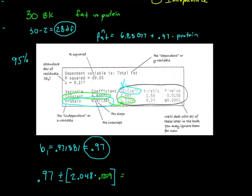So it would be 0.97 minus 2.048 times 0.1209. So I get that my slope could be as low as 0.7224 to as high as 1.2176.